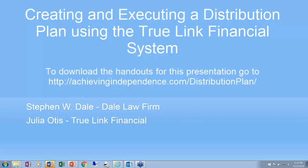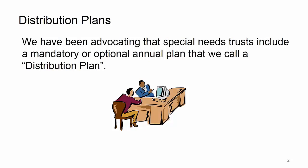Part of this with distribution plans — something we've been advocating for years — is that more and more in the trusts we're creating, we have either a mandatory or optional plan called a distribution plan. It's basically a budget. What we've really found is that by doing these annual plans, it really resolves a lot of issues and helps us to identify and anticipate problems before they become a problem.